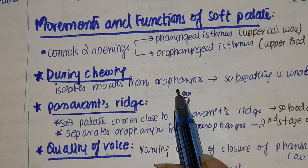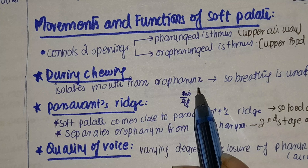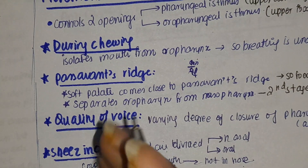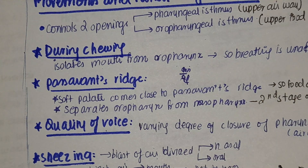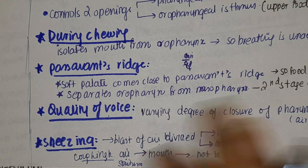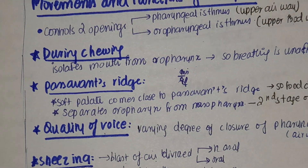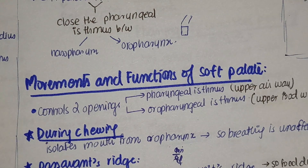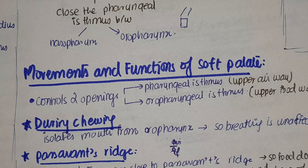To summarize: during chewing, the soft palate separates the mouth from the oropharynx so breathing is unaffected; Passavant's ridge does not allow food to enter the nose; voice quality is controlled by opening or closure of the pharyngeal isthmus; sneezing distributes air between nose and mouth; and coughing pushes all air out through the mouth. With that we are done with the functions. In the next video we will discuss the blood supply, veins, lymphatics and clinical anatomy related to the soft palate.